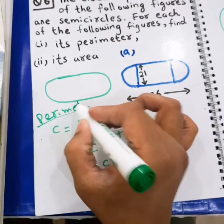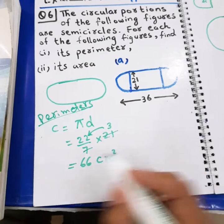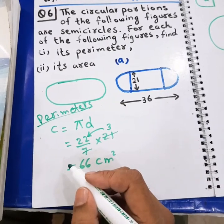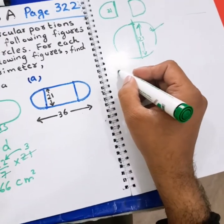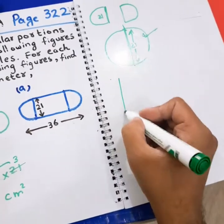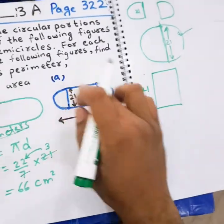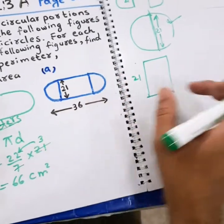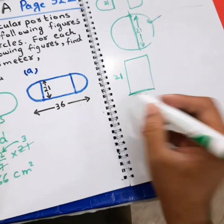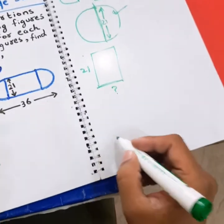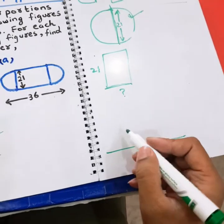I have performed the operations to find the circumference, but I have not yet found the full perimeter — I have only found the circumference of the circle. Now we shall look at the rectangle. The rectangle has a height of 21, and the full length given in the question is 36.